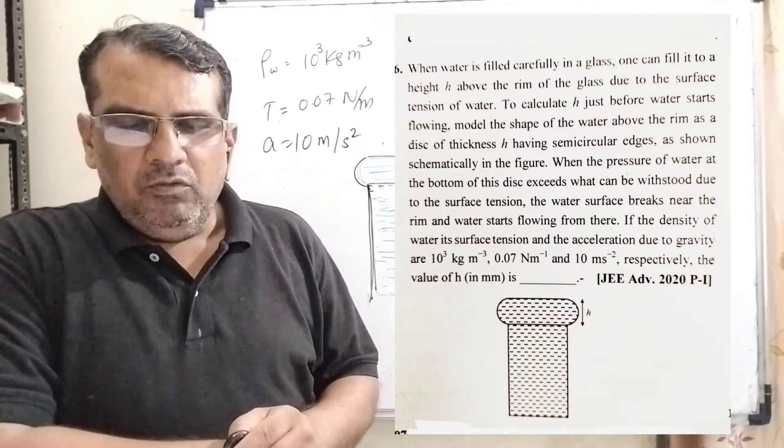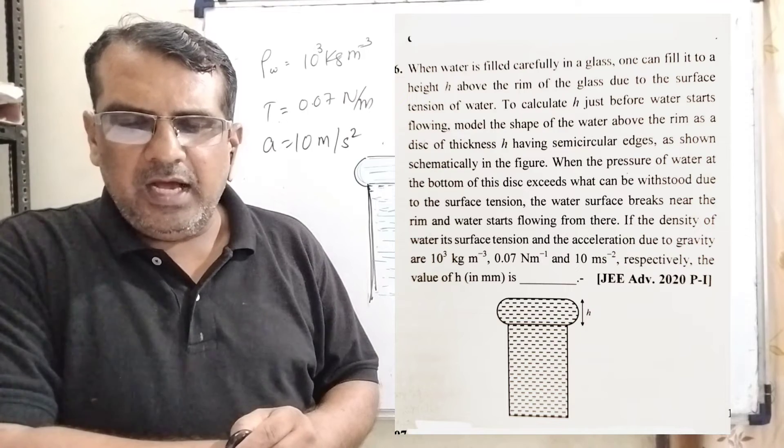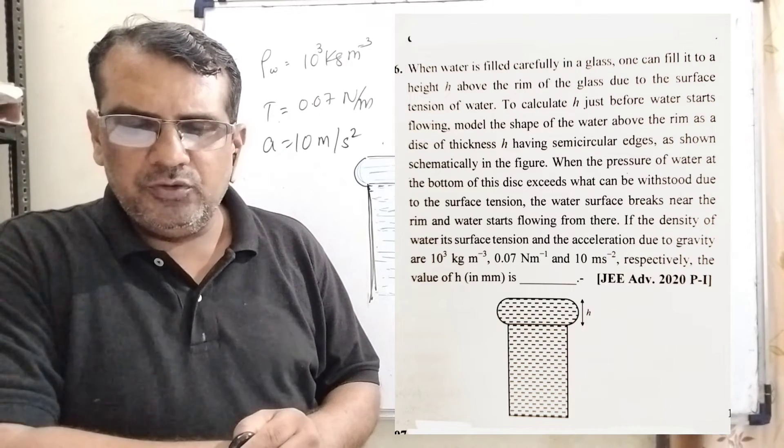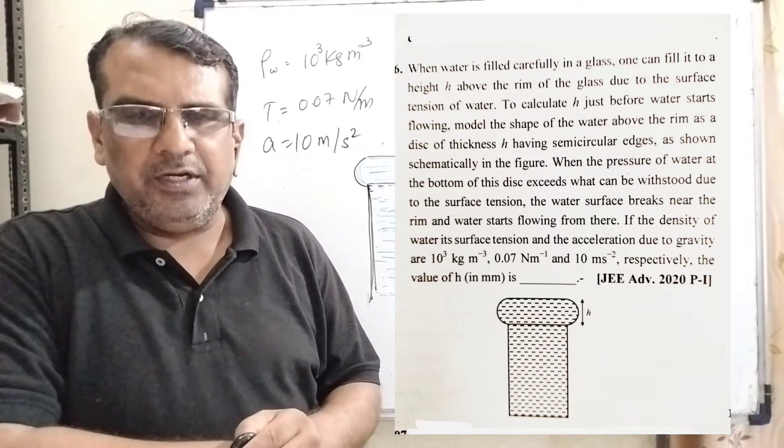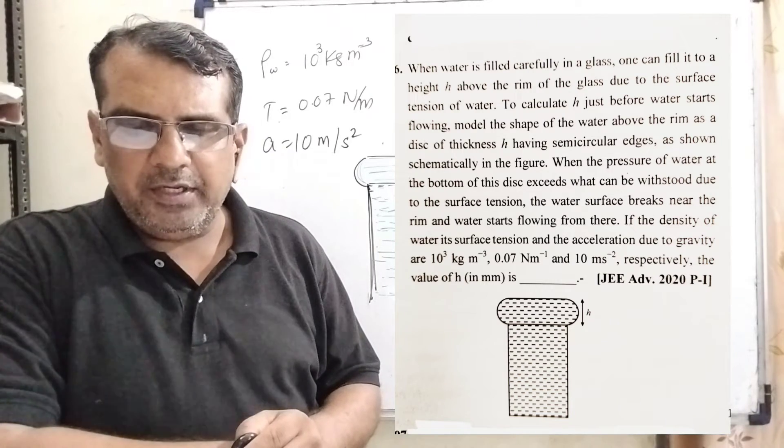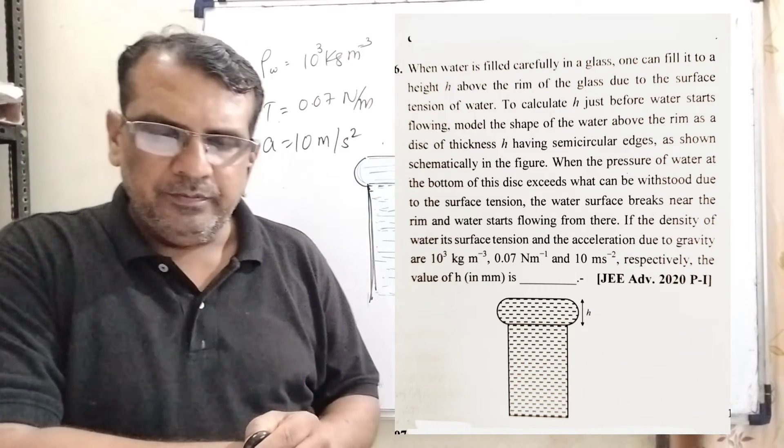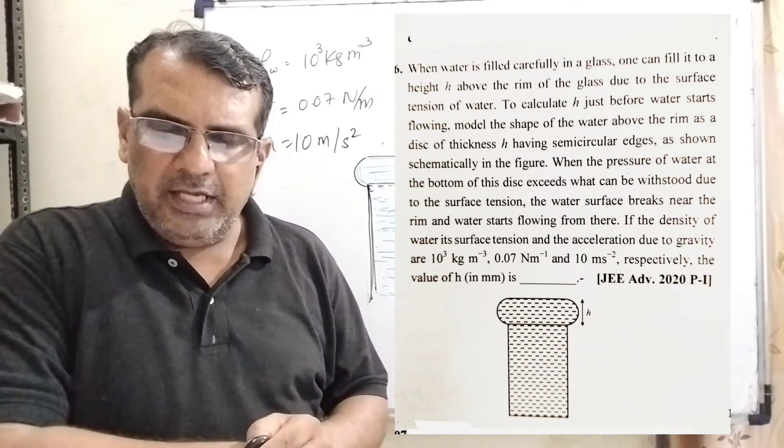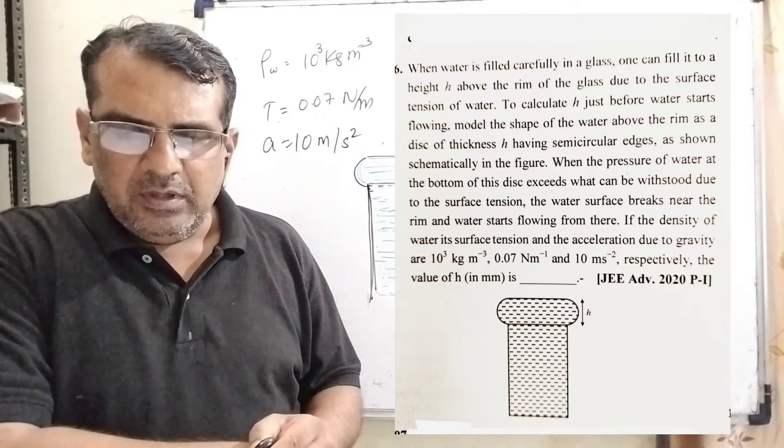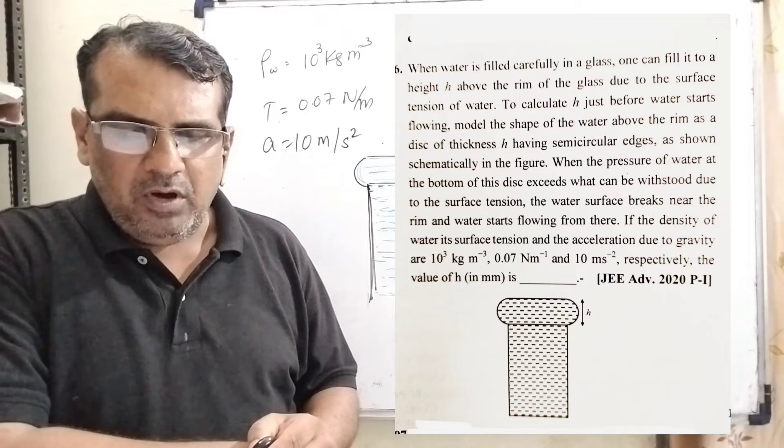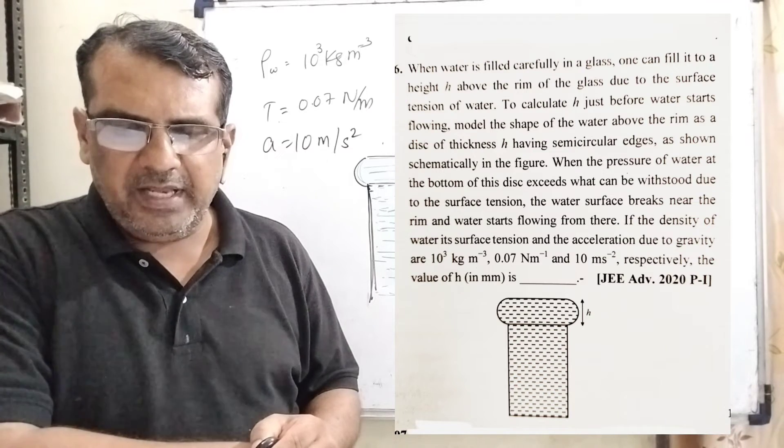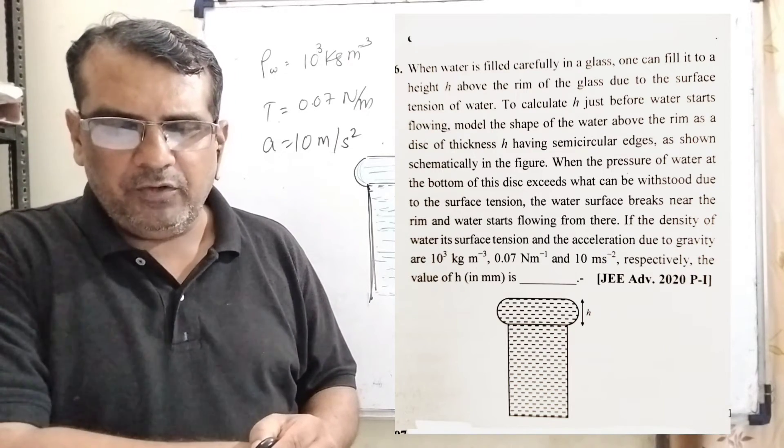Now here is the question. When water is filled carefully in a glass, one can fill it to a height h above the rim of the glass due to the surface tension of water. To calculate h just before water starts flowing, model the shape of the water above the rim as a disc of thickness h having semicircular edges as shown schematically in the figure. When the pressure of water at the bottom of the disc exceeds what can be withstood due to the surface tension, the water surface breaks near the rim and water starts flowing from there.